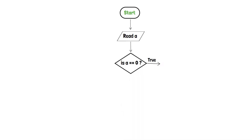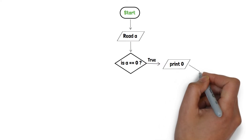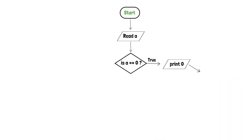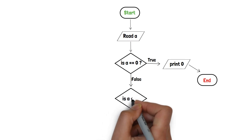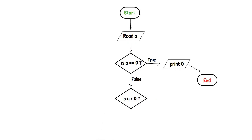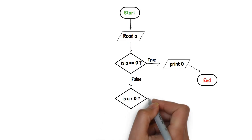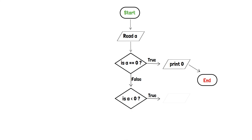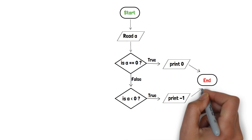If yes, then we will print 0 with the help of an output component and end the program through the end terminator. If not, then we will again create a decision box and compare whether a is less than 0 or not. If yes, then we will print minus 1 and end the program.